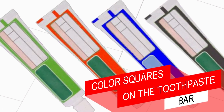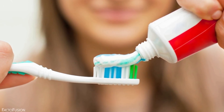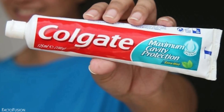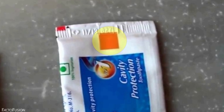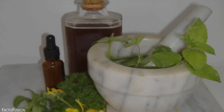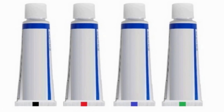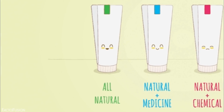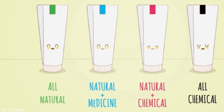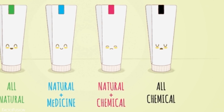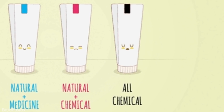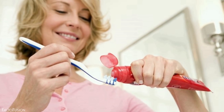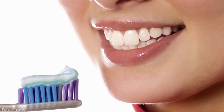At number six: color squares on the toothpaste tube. Do you know what type of toothpaste you use — is it natural, chemical, or medicinal? Turn around your toothpaste tube and near the crimp you can see a small color square. The color denotes the type of material your toothpaste is made from: green means natural ingredients, blue means natural plus medicinal, red means natural plus chemical, and black means purely chemical.